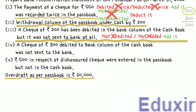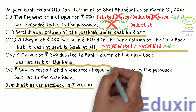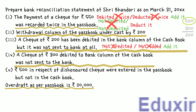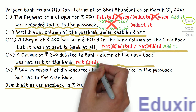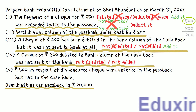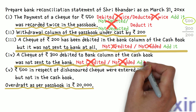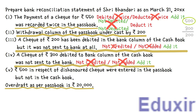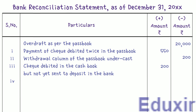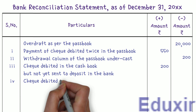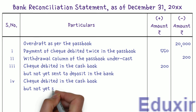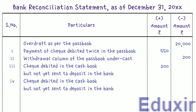Next, it is given that a cheque for 300 rupees is debited in the bank column of the cashbook, but it was not sent to the bank. So this cheque was not entered in the bank passbook, causing a difference between the business cashbook balance and the bank passbook balance. We need to add this amount to the passbook balance to get the cashbook balance. Let us write the particulars as 'Cheque debited in the cashbook but not yet sent to deposit in the bank' and enter 300 rupees in the plus amount column.